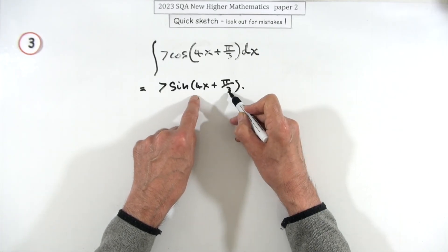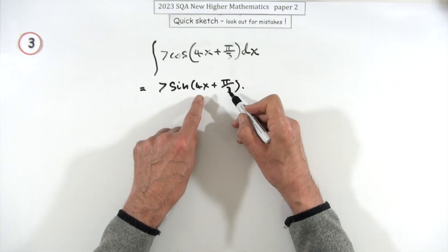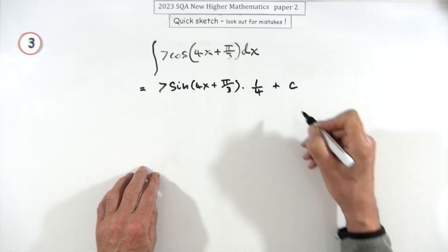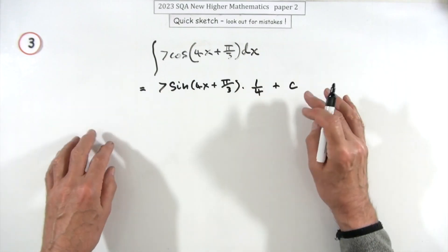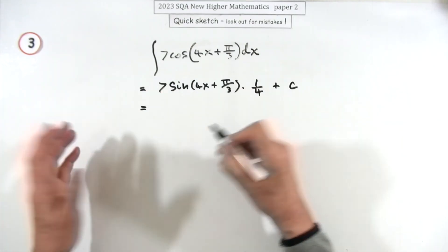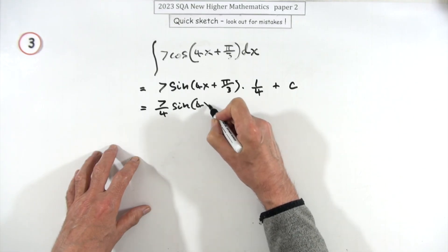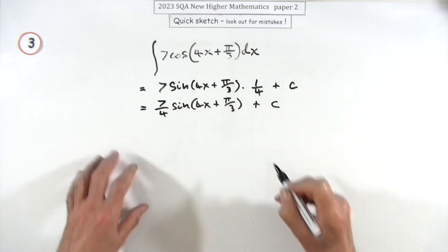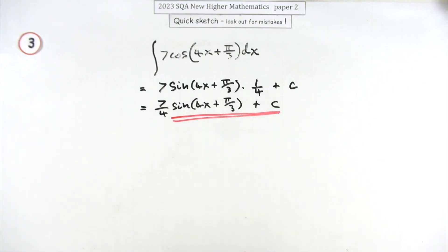But since it's not a simple sine x but a sine of something, if you were differentiating you would have multiplied by the derivative of that linear part, which is a 4. So here you're going to divide by a 4. And don't forget plus c because that disappears. So the answer to this is just simply 7 upon 4 sine of 4x plus π upon 3. And don't forget the constant. I do forget the constant.